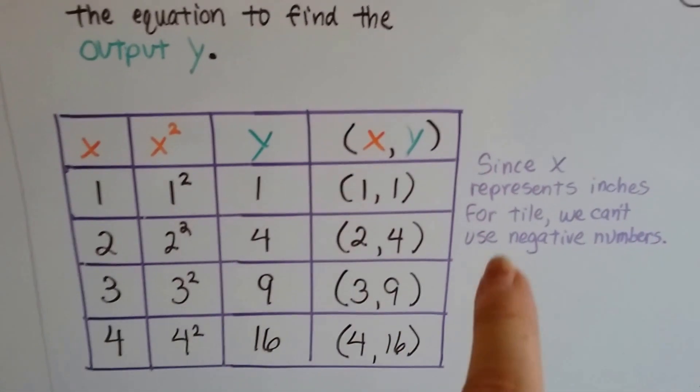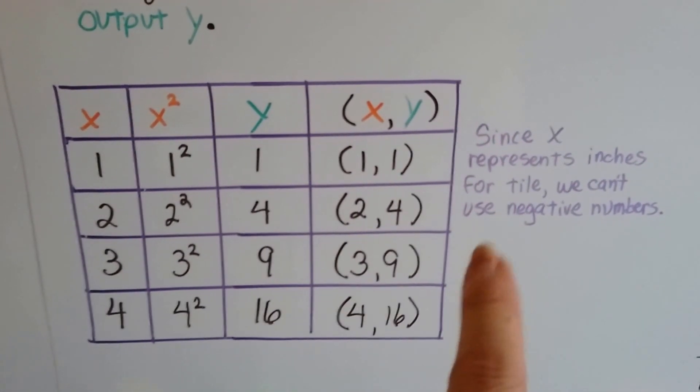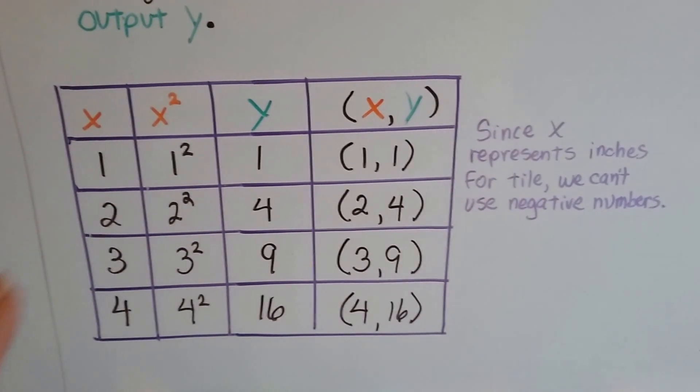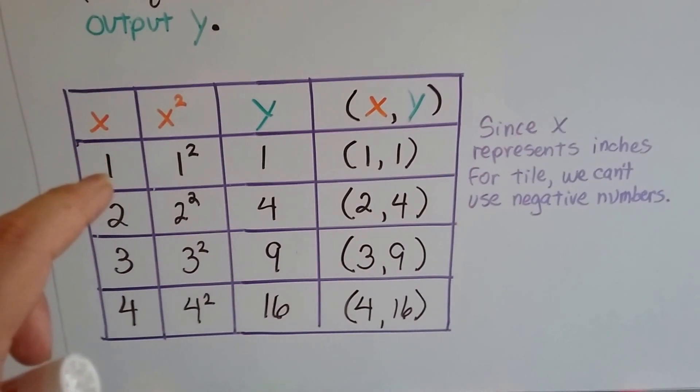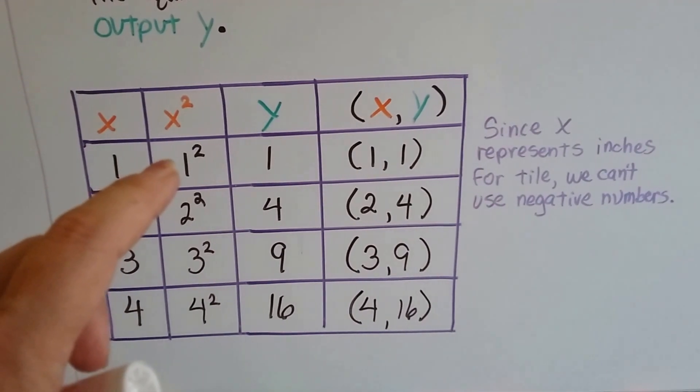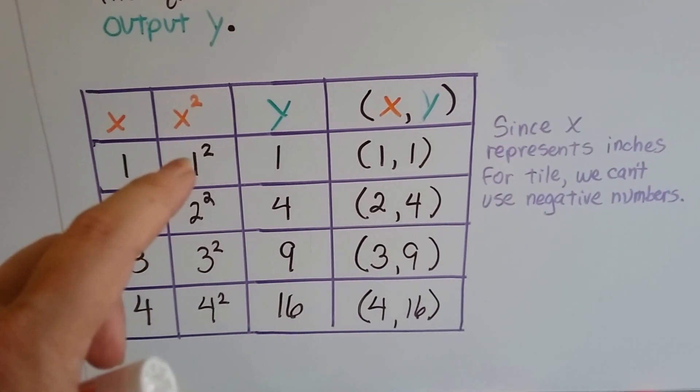Since x represents inches for tile, we can't use negative numbers. We've got to use positive numbers. So if the tile is one inch on a side, then it would measure one inch by one inch. It would be one inch squared.